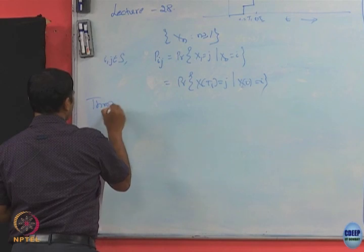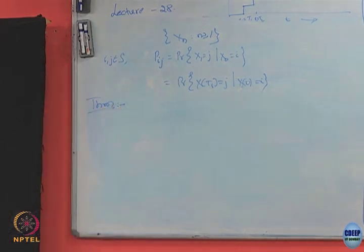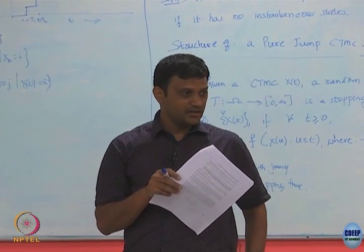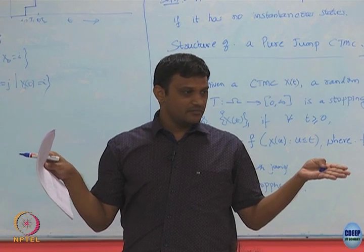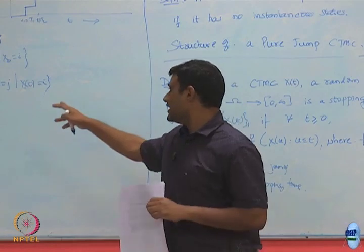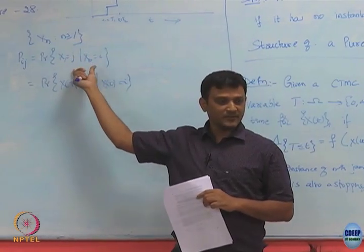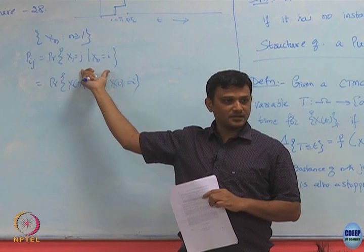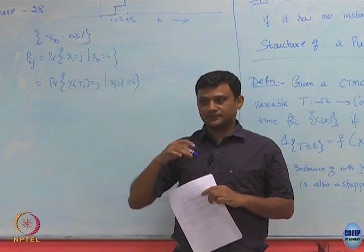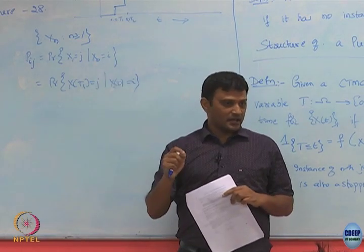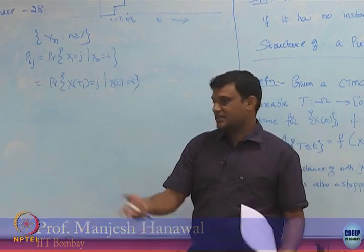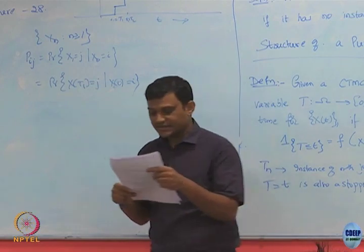We are going to state a relation which combines the next state given that I have already spent this much time in my current state. So, this is already what is the state — you are just going to state j whenever the jump has happened when you started from state i. You may also ask: given that I have been in state i and already spent this much time, what is the probability that I go to state j? Let us formalize that.